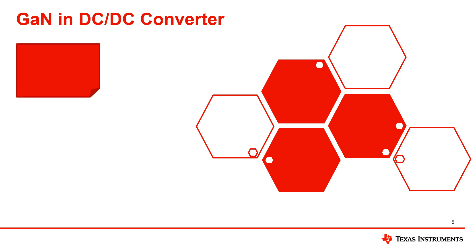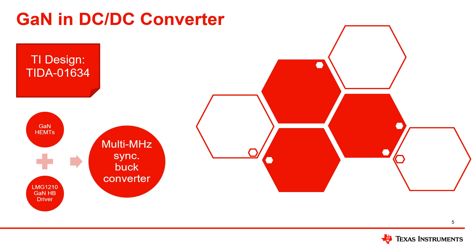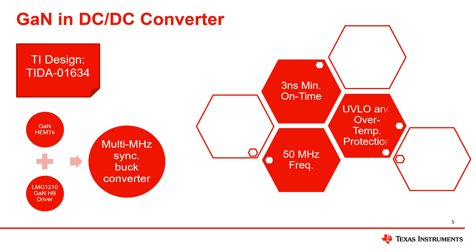An example of the use of GAN for a DC to DC converter can be seen in the TI design TIDA01634. This reference design uses GAN power HEMTs and a latest generation driver, the LMG1210 GAN half bridge driver, to realize a multi megahertz synchronous buck converter with high efficiency. This buck converter can realize three nanoseconds of minimum on time and up to a 50 megahertz operating frequency. This design also provides driver under voltage lockout and over temperature protection.